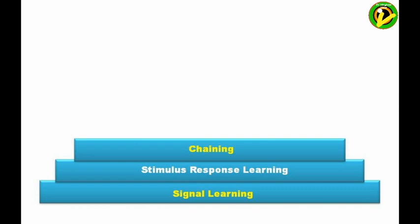Chaining is a more advanced form of learning in which the subject develops the ability to connect two or more previously learned stimulus-response bonds into a linked sequence. It is the process whereby most complex psychomotor skills are learned — for example, riding a bicycle or playing the piano.